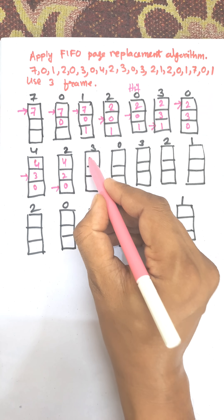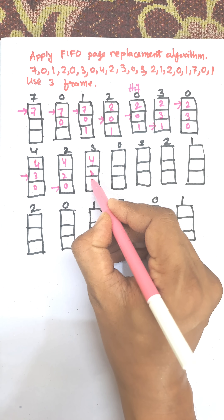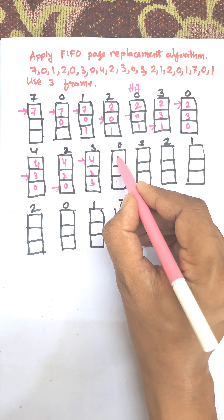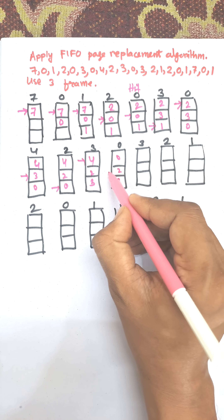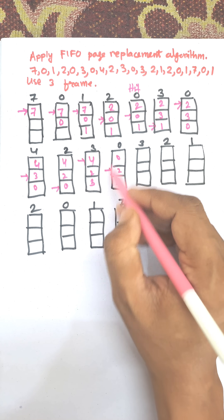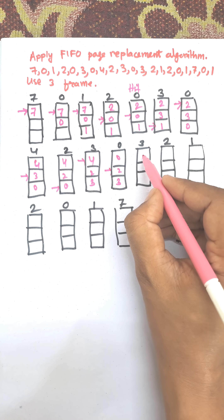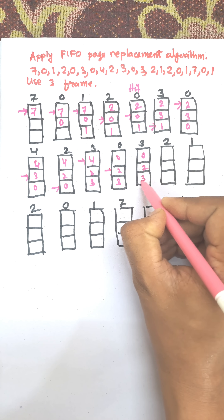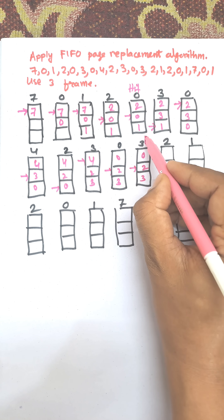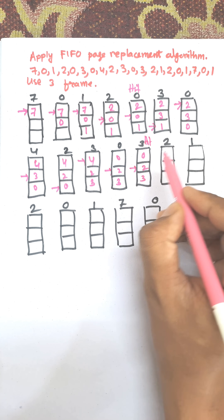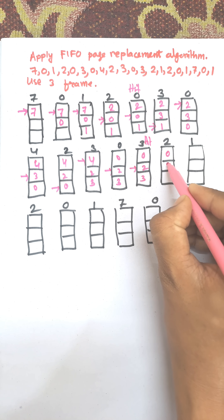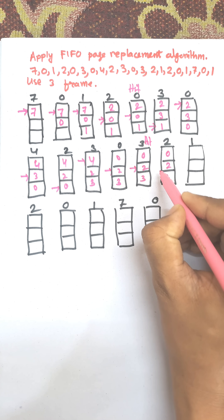Next, page 2 comes in: 3 is replaced, giving frames 4, 2, 0. Then page 3: 0 is replaced, giving 4, 2, 3. Next is page 0: 0 is already available in the frames, so this is a hit and the pointer remains the same. Then page 1: 1 is already available in memory, so this is also a hit.